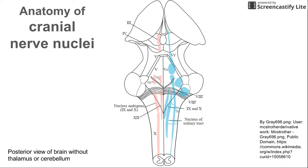This is a short video showing the anatomy of the cranial nerve nuclei. Before we begin, we see this picture here with some of the nuclei labeled, and it's important to orient you by telling you that this is the posterior view of the brain without the thalamus or the cerebellum.